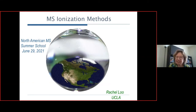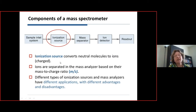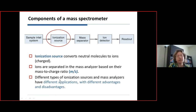Thanks for inviting me to talk about ionization methods. When we think about mass spectrometers, we think about all of these components that comprise an instrument. The ionization source is important because it converts neutral molecules into charged species. Once they are charged, they can be steered by electric fields, separated on the basis of mass-to-charge, and detected. There are different types of ionization sources depending on the types of molecule and the application.